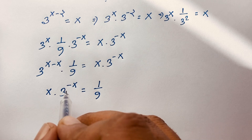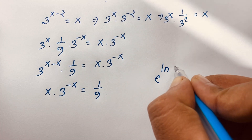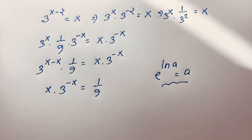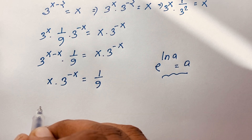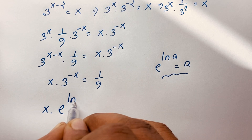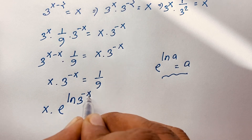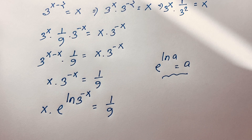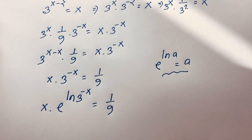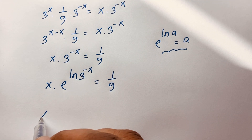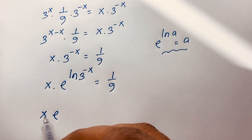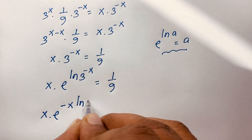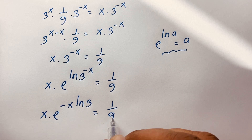We know that e to the power ln a is equal to a. Applying this law, I can rewrite the expression as x times e to the power ln 3 to the power negative x is equal to 1 over 9. Moving the exponent in front gives: x times e to the power negative x ln 3 is equal to 1 over 9.